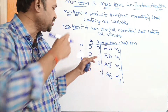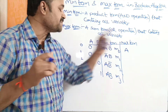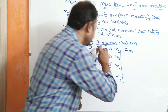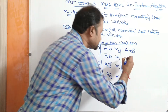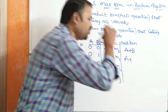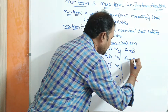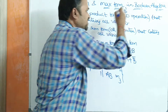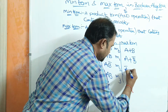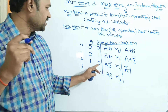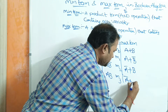Let us write the maxterm for each combination. For 0,0: 0 means we write the variable as is, so A+B. For 0,1: 0 means A (as is), and 1 means complement of B, so A+B̅. For 1,0: 1 means complement of A, giving A̅+B. For 1,1: 1 means complement of both A and B, so A̅+B̅.